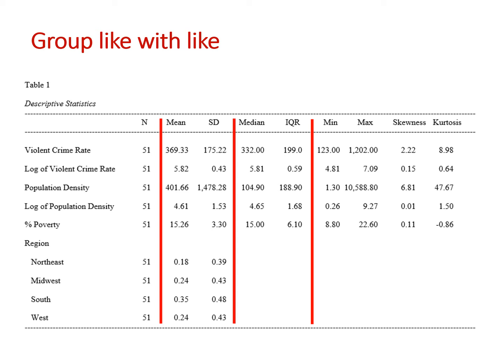The rules about grouping like with like are not really stated out loud, but you do want to lay out your table in a way that makes sense. For example, it wouldn't make sense to lay out columns in this order: mean, n, standard deviation, interquartile range, median — that order is just very confusing. So when I say group like with like, the idea is to do something that makes logical sense.